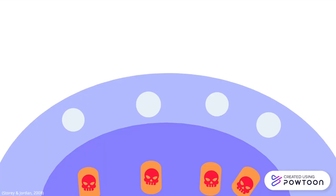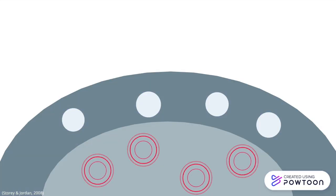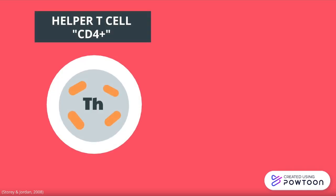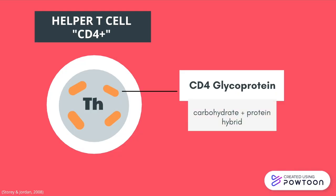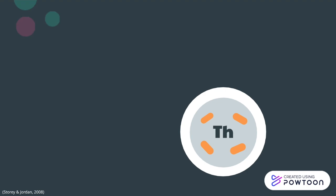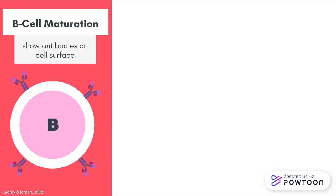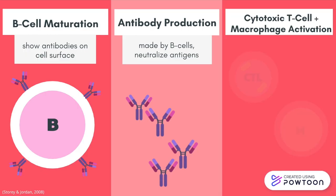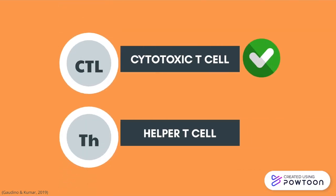These perforin-created holes act as lethal delivery channels, carrying enzymes that eat away at infectious target cells and force cell death. Next, helper T-cells — known as CD4+ T-cells — have CD4 glycoproteins on their cell surface and recognize antigens with MHC class 2 molecules. They orchestrate immune responses by helping in the maturation of B-cells, production of antibodies, and activating cytotoxic T-cells and macrophages.